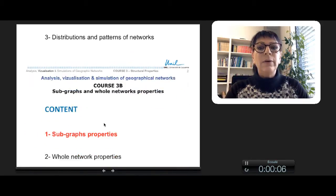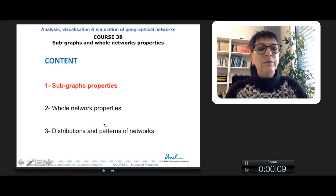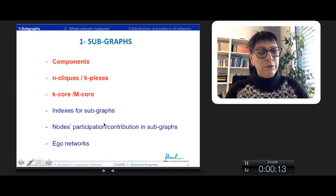In the subgraph properties, we will treat six main parts, but three in this first part: Components, N-Click and K-plex, K-Core and M-Core.